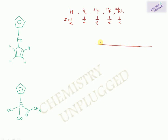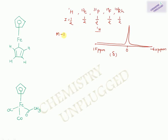In NMR, chemical shift is determined with respect to TMS (tetramethylsilane). For organic compounds, the chemical shift range is 0 to 15 ppm. However, for protons in metal clusters — those directly attached to metals or under metal influence — peaks appear in the negative range, from 0 to minus 60 ppm.